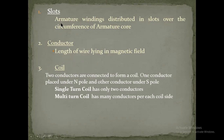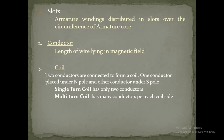Armature winding is distributed in slots over the circumference — meaning the full 360 degree outer surface — of the armature core. A conductor is the length of wire lying in the magnetic field. Two conductors are connected to form a coil: one conductor is placed under the north pole and another under the south pole, because the basic necessity of a conductor is to make an electromagnet, whether it is field winding or armature winding.